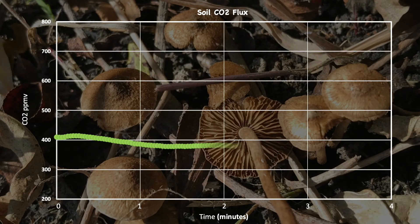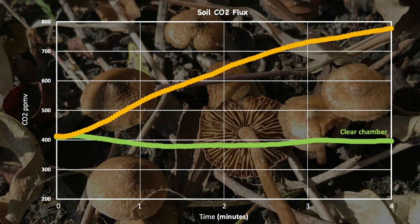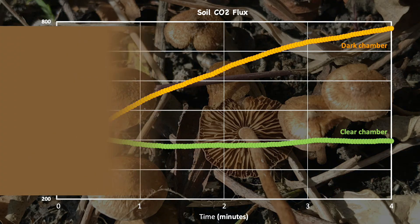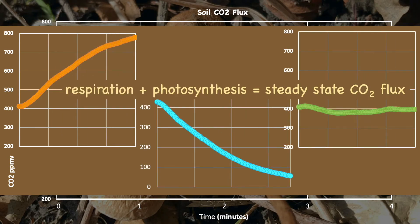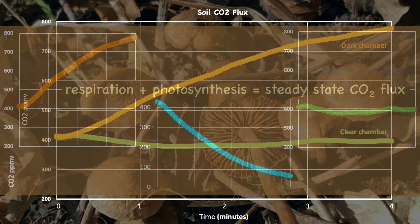Here's the graph of carbon dioxide concentration in the clear chamber. Looks like there's not much happening here. Does this match the hypothesis you made five minutes ago? Let's look at the data from the dark chamber. Here we've got carbon dioxide increasing with time — that's certainly what we would expect to see if we've got soil respiration pumping CO2 up into the chamber. So what does that tell us about the clear chamber? Is there really nothing going on, or do we have both photosynthesis and respiration happening at the same time, so that their effects on carbon dioxide concentration cancel each other out?